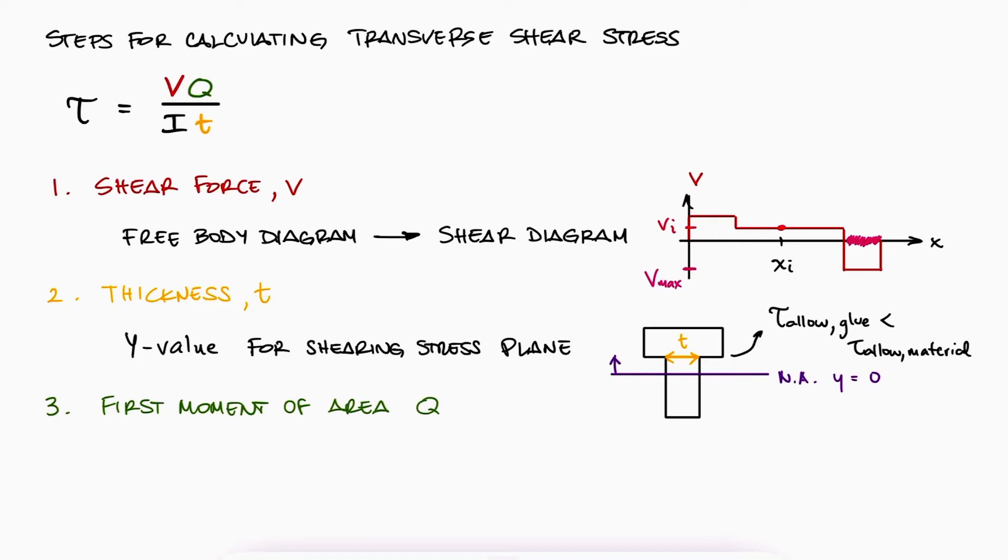The first moment of area, as explained earlier, will be the shaded area above or below the plane of interest where t was drawn times the distance from the neutral axis to the centroid of that shaded area. And it doesn't matter if it's the area above or below that plane. You will always get the same result for q.